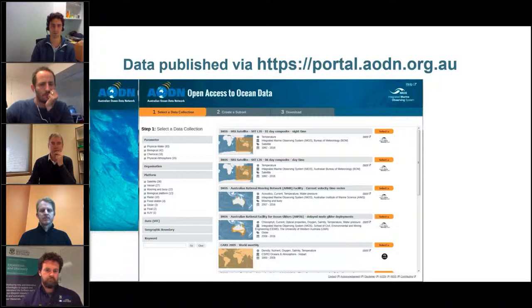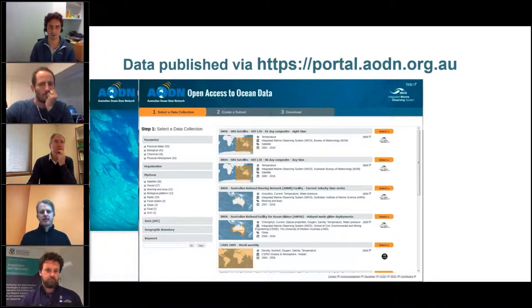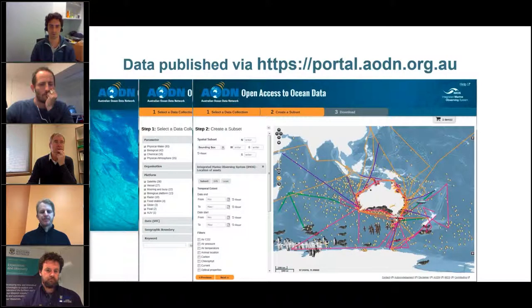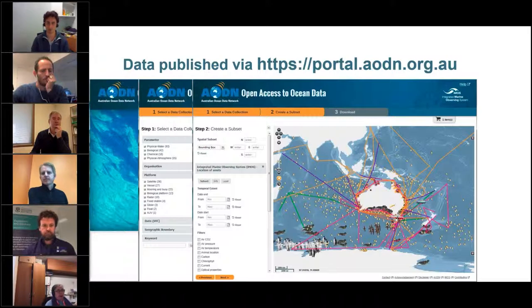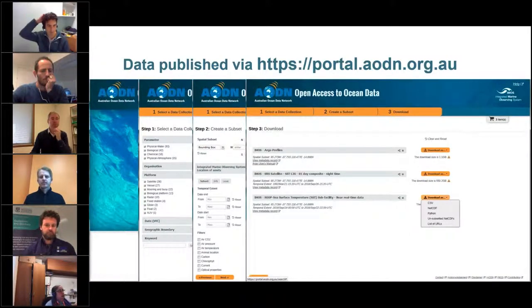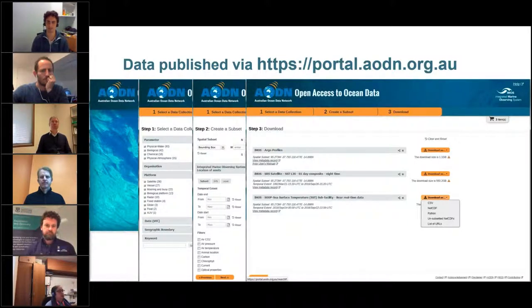The portal works in three steps. Step one is search and discovery — you look through different dataset collections using facets like parameter, platform, or organisation. Step two lets you visualise different dataset collections and overlay them, filtering by spatial subset, temporal extent, or parameter subset. And step three is the download panel, where you can select and download the data you want in different formats.